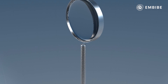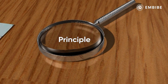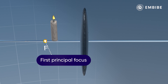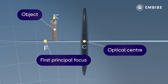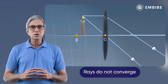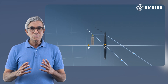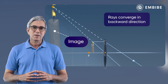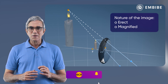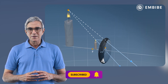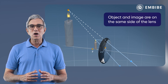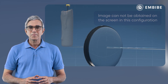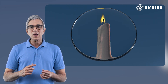Let us see the principle and the working of a simple microscope. When an object is placed between the first principal focus F and the optical centre C of a convex lens, the rays emerging from the object do not converge. But they seem to converge at a point obtained by extending the rays backwards beyond the lens. The image obtained is erect, magnified, and virtual. In such a case, the object and the image are on the same side of the lens, and it is not possible to get the image on a screen — it must be observed from the other side of the lens.